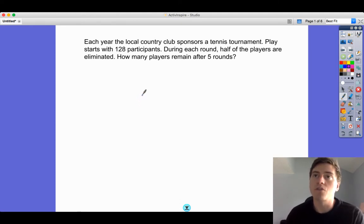The difference is, are we losing the same amount of players each time? We start with 128. Each round, half the players are eliminated. Half of 128 is 64, half of 64 is 32, half of 32 is 16. It's not the same amount each time. That tells us it's exponential.